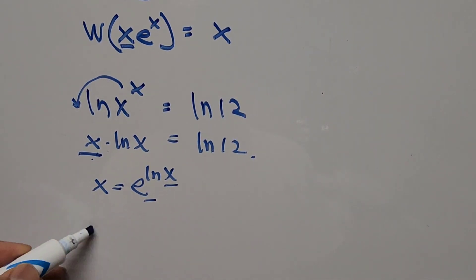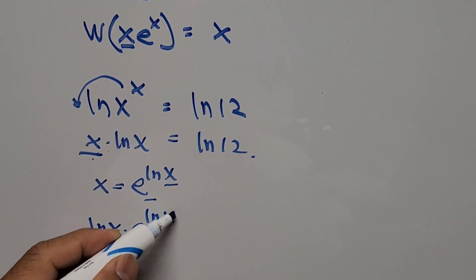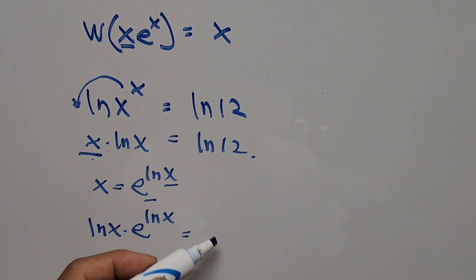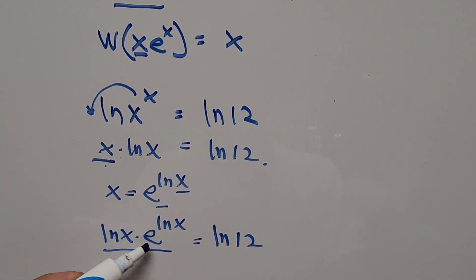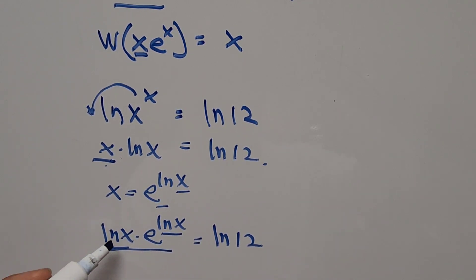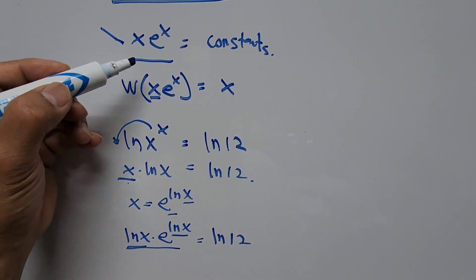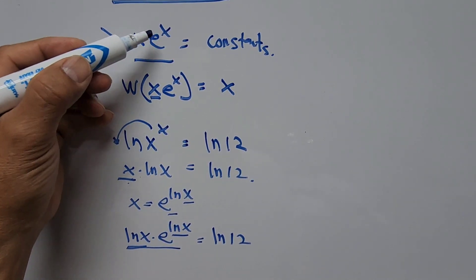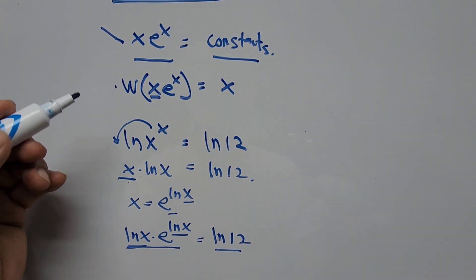Substituting, the left hand side becomes ln(x) times e to the power of ln(x), which equals ln(12). Notice the exponent ln(x) matches the base ln(x) — this is exactly the target format x·e^x = constant that we need to apply the Lambert W function, so we can now extract the value of x.